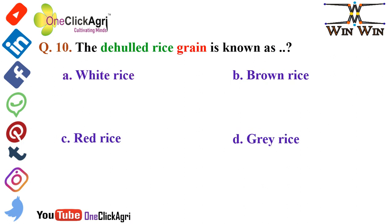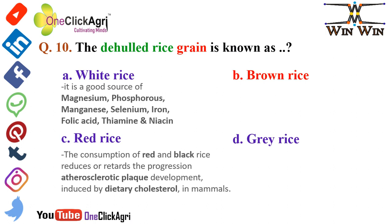The next question: the dehulled rice grain is known as brown rice. The other two options are white rice and red rice. White rice is a good source of magnesium, phosphorus, manganese, selenium, iron, folic acid, thiamine, and niacin. The consumption of red and black rice reduces or retards the progression of atherosclerotic plaque development induced by dietary cholesterol in mammals — please remember this.